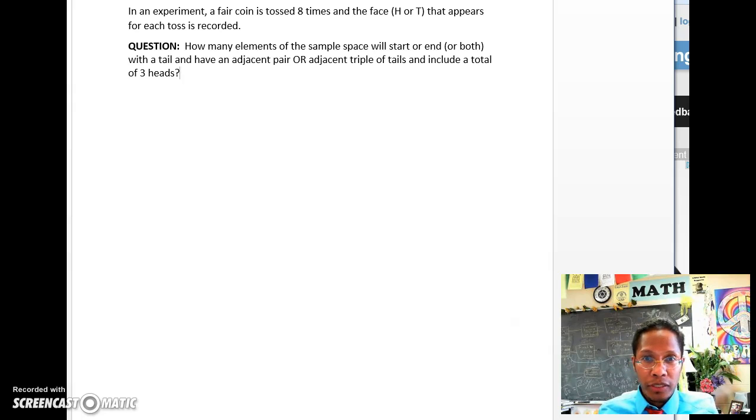In an experiment, a fair coin is tossed eight times and the face H or T that appears for each toss is recorded. The question is: How many elements of the sample space will start or end or both with a tail and have an adjacent pair or adjacent triple of tails and include a total of three tails?